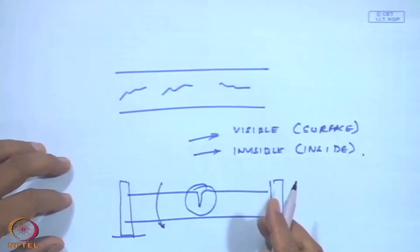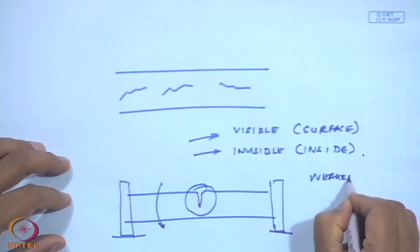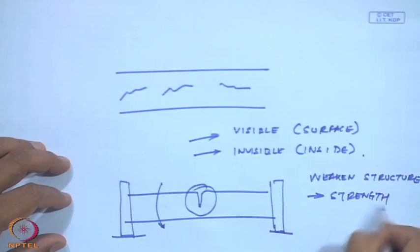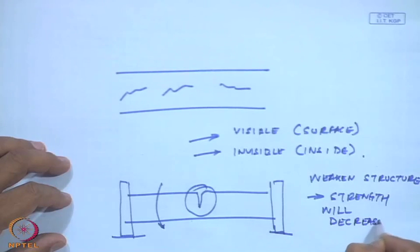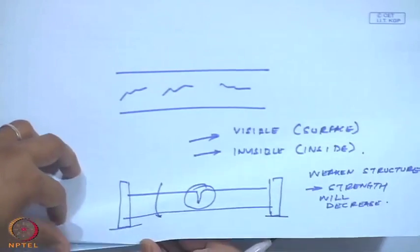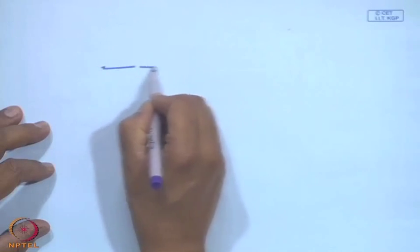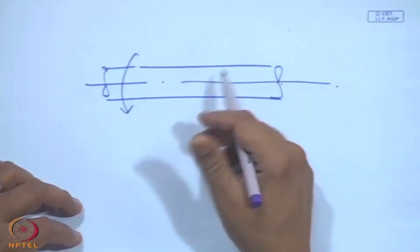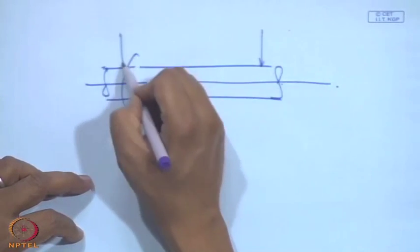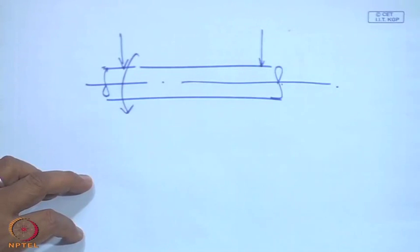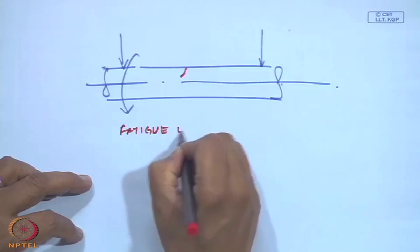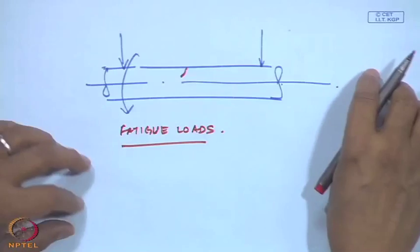A generic crack is going to weaken the structure and its strength is going to decrease. Once shafts are rotating this becomes a very complicated issue. If there are weights being carried on the shaft, because they are rotating, these cracks are subjected to varying loads — there will be fatigue loads on the crack.